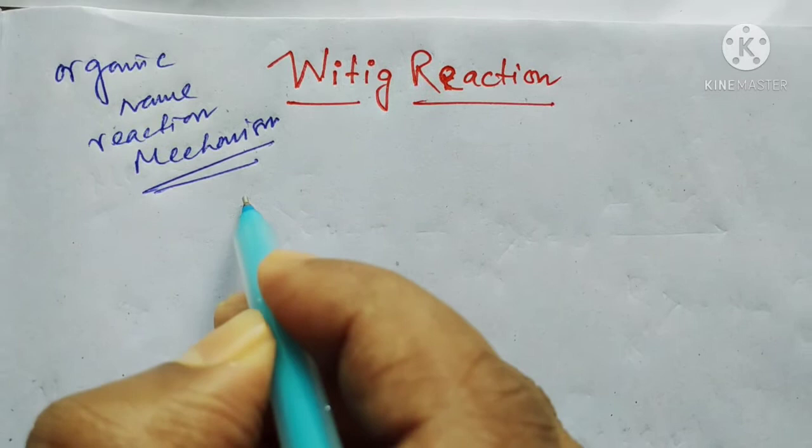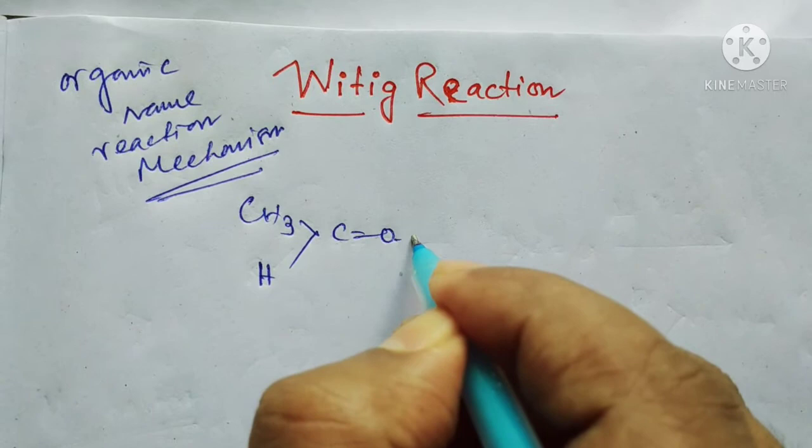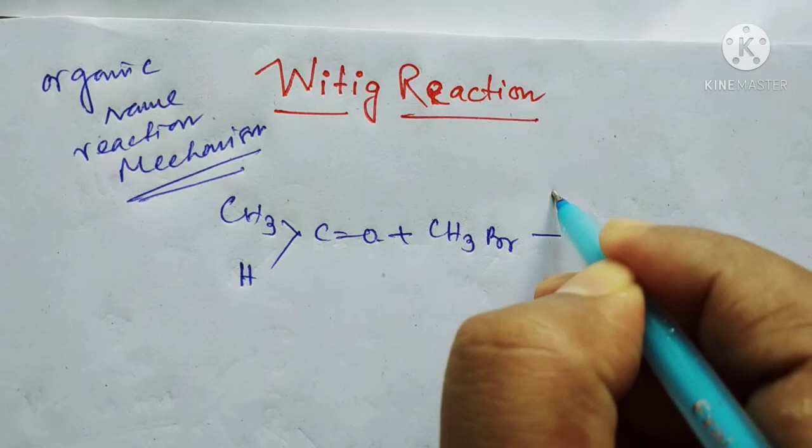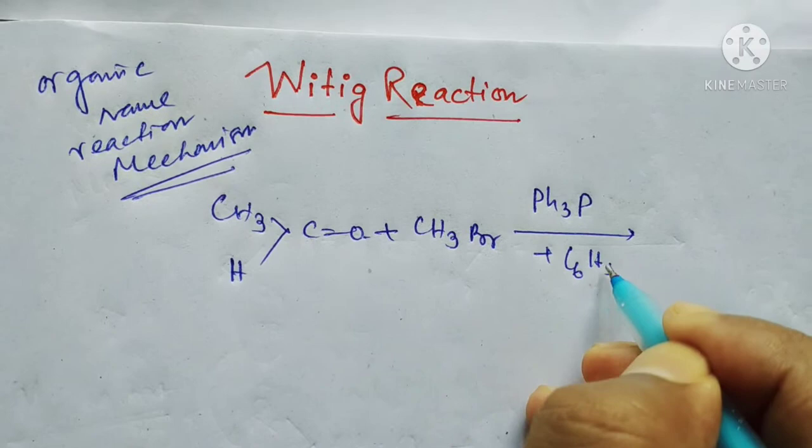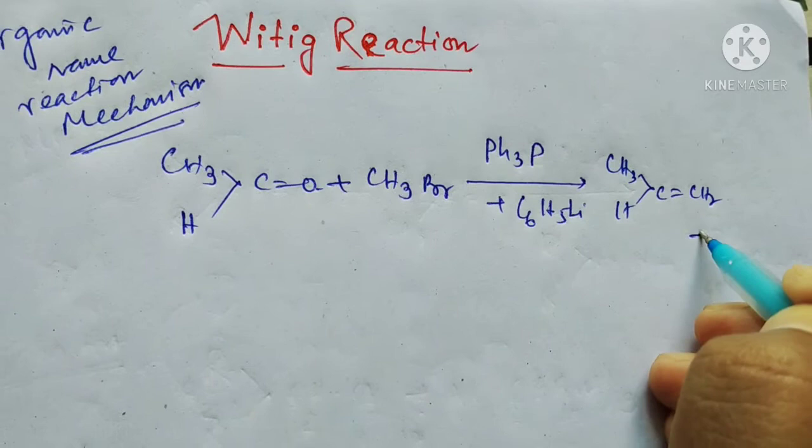For example, I'm taking acetaldehyde. Acetaldehyde in the presence of CH3Br (methyl bromide), triphenyl phosphine (Ph3P), and phenyl lithium (C6H5Li) produces an alkene and Ph3P=O.